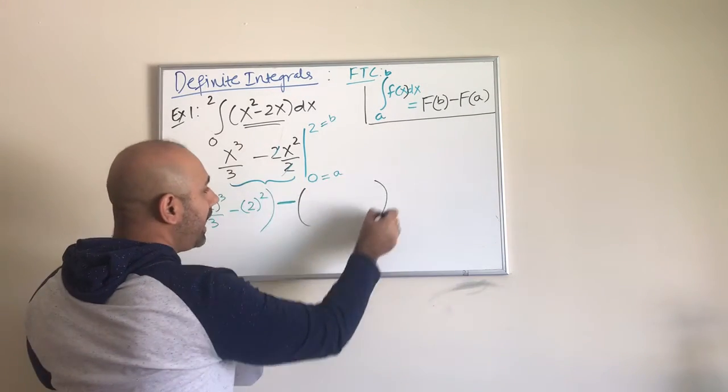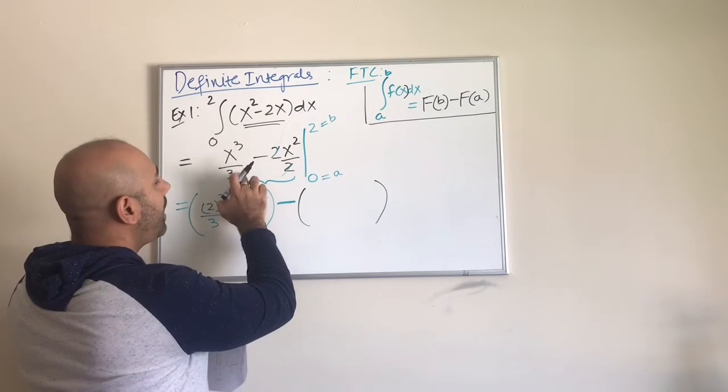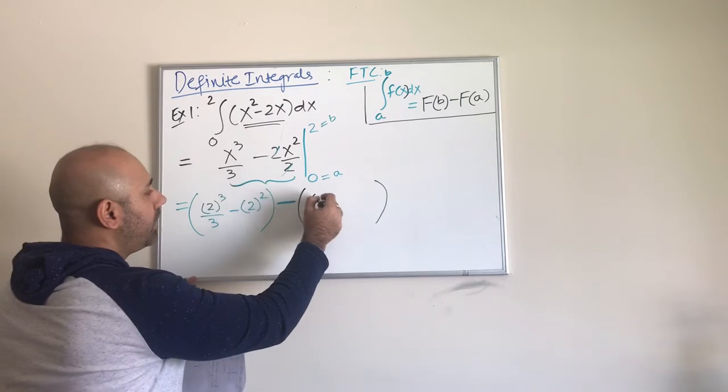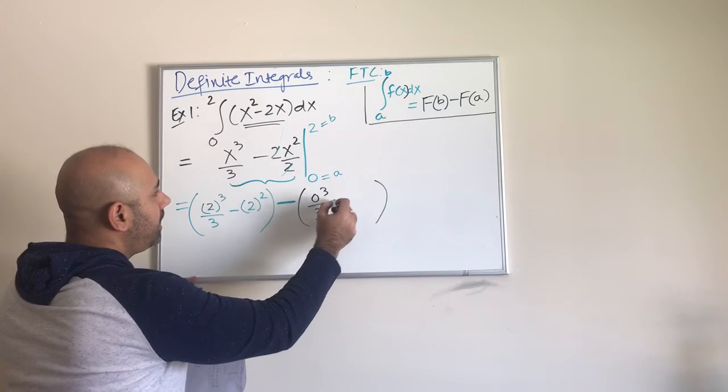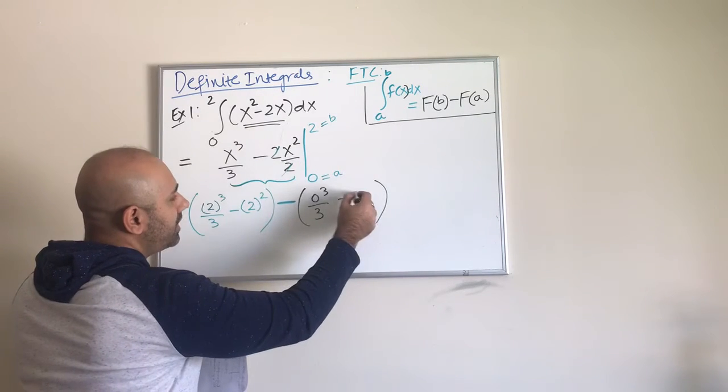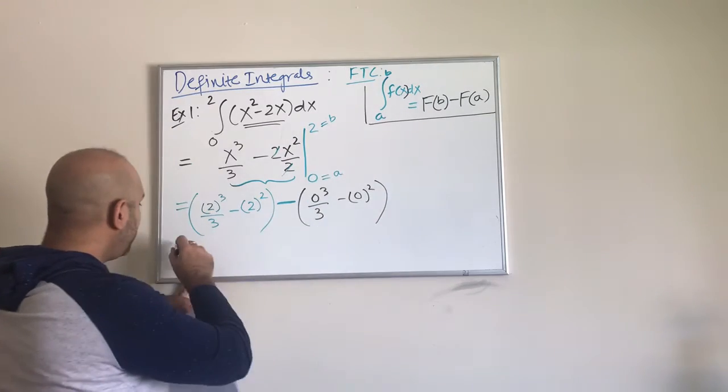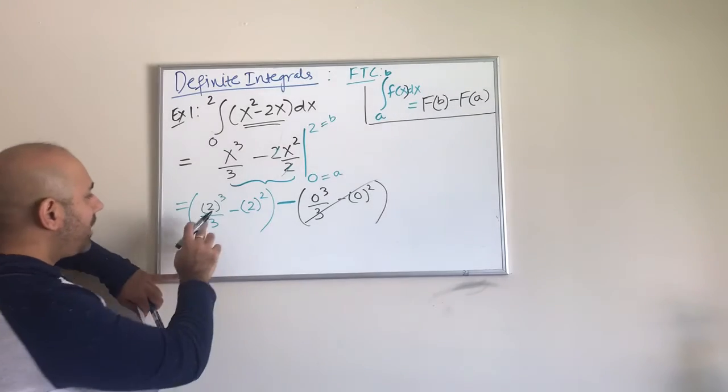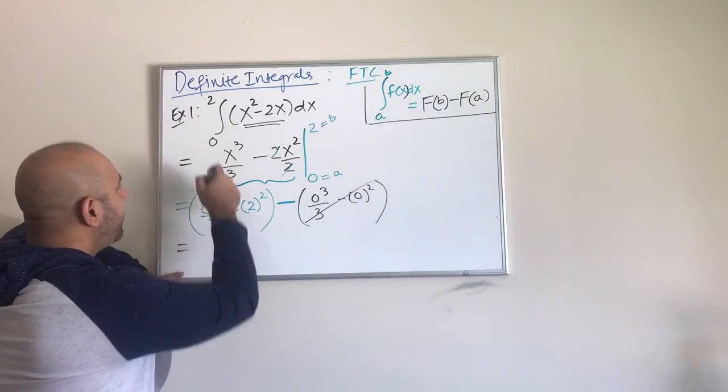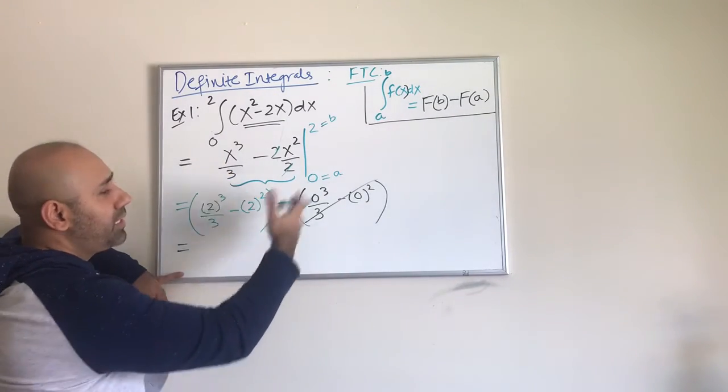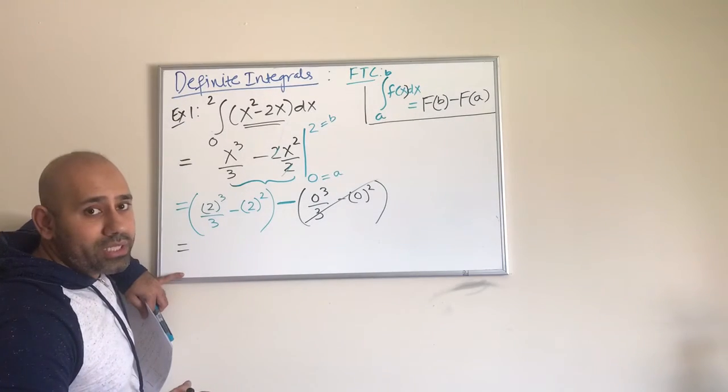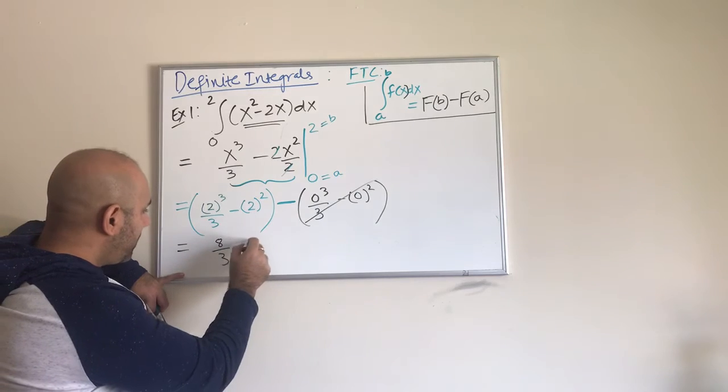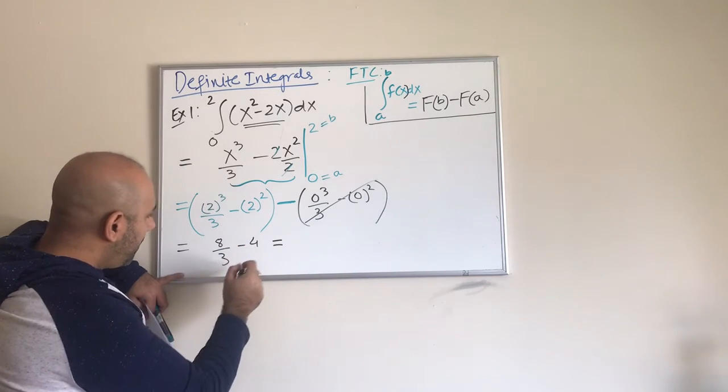And then the next piece is again the same function, but now you have to evaluate that function at the lower limit, which is at x equals to 0. So it is going to be 0 cubes divided by 3 minus x square again 0 square. So what happens here is that this whole term vanishes because it's like zeros and zeros. We're only left with this term. Usually when the lower limit is 0, life becomes easier. Most of the times the second piece actually just goes away. Let us simplify this. So 2 cubes is 8 thirds and minus 4. Well, we still need to combine them.